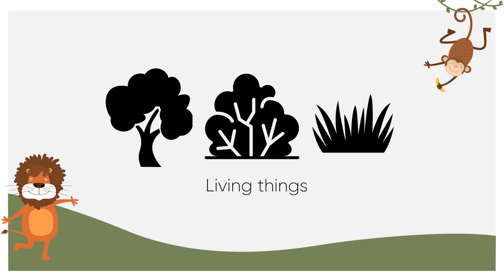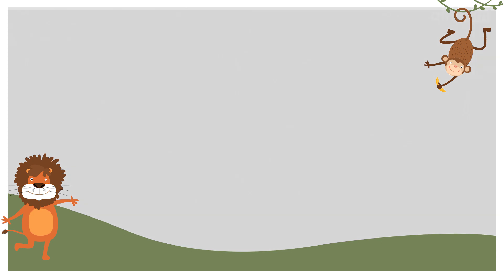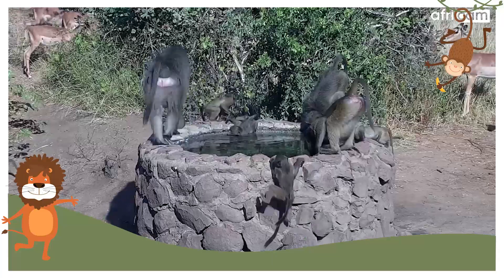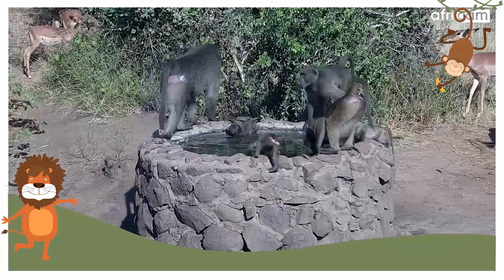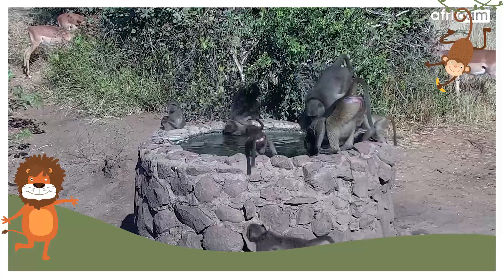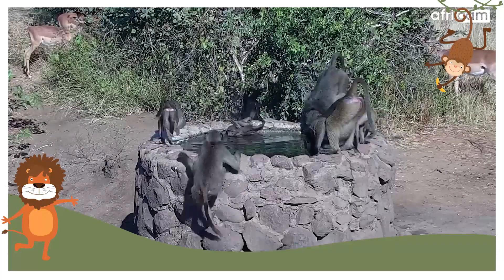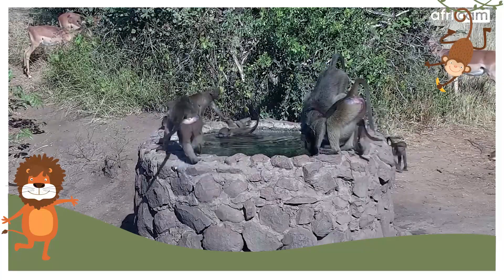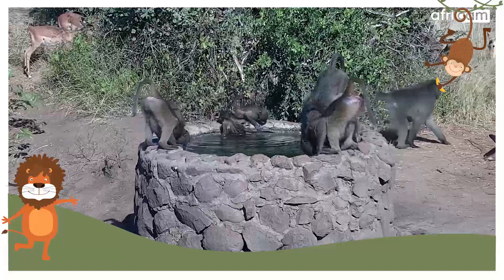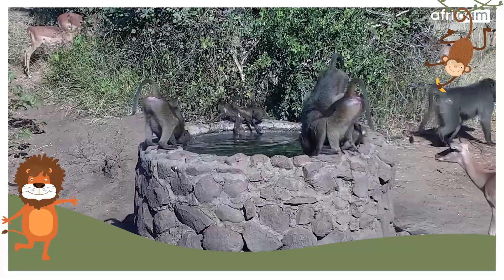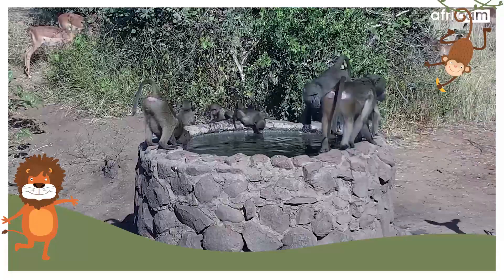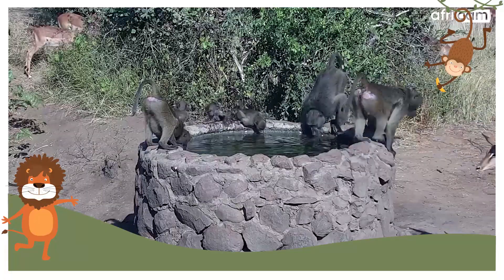Together they form the perfect environment — the perfect ecosystem — for all sorts of things to survive, whether they be as big as an elephant or as small as a mouse. They all need these links to work together to form the perfect ecosystem.